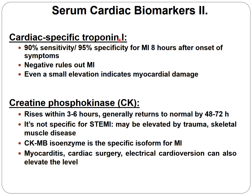Troponin I is more sensitive and selective for MI than Troponin T. A negative result rules out myocardial infarction, and even a small elevation indicates myocardial damage. Creatine phosphokinase (CPK) behaves similarly — it also begins to increase at three to six hours after the event.